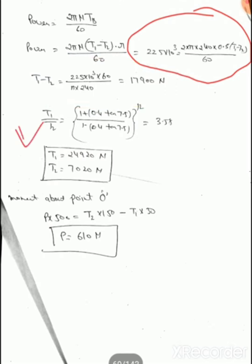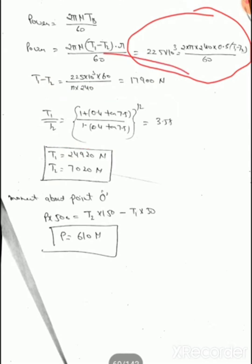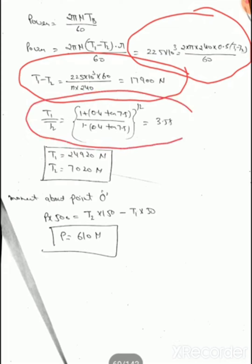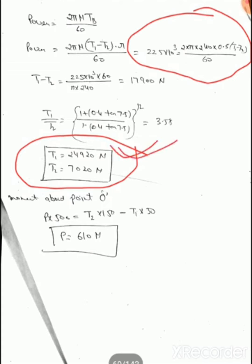We also know T1/T2 = [(1 + μ·tan θ)/(1 - μ·tan θ)]^n. With n = 12, θ = 7.5°, μ = 0.4, the ratio T1/T2 = 3.55. From T1 - T2 = 17900 and T1/T2 = 3.55, solving these two equations simultaneously gives T1 = 24920 N and T2 = 7020 N.